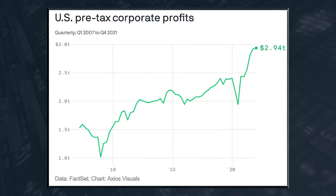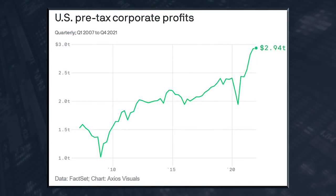Companies are actually not suffering from inflation at all. They're doing extremely well. And that's because they have pricing power. Here's a chart showing U.S. pre-tax corporate profits. Since basically the subprime crisis, corporate profits have been on their way up. They fell during COVID, but then — boom — they've almost doubled since just before the COVID-19 crisis.